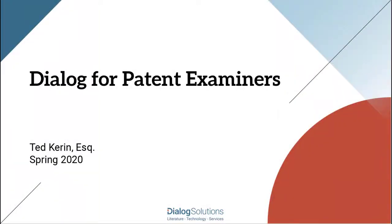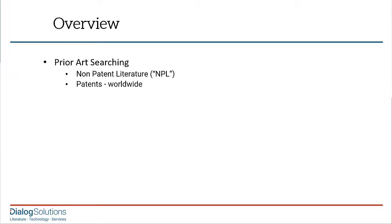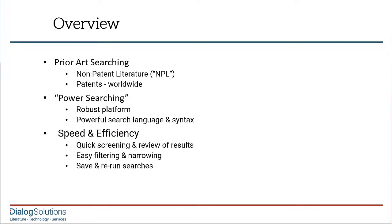In this video, we'll look at the work done by patent examiners and some of the key things that they require when doing a prior art search, and I'll talk about some of the ways that Dialog is especially well designed to meet the particular search needs of patent examiners. I'll break it down into three broad categories: the content patent examiners need, what they need from the search platform itself, and workflow efficiency. So let's get started.